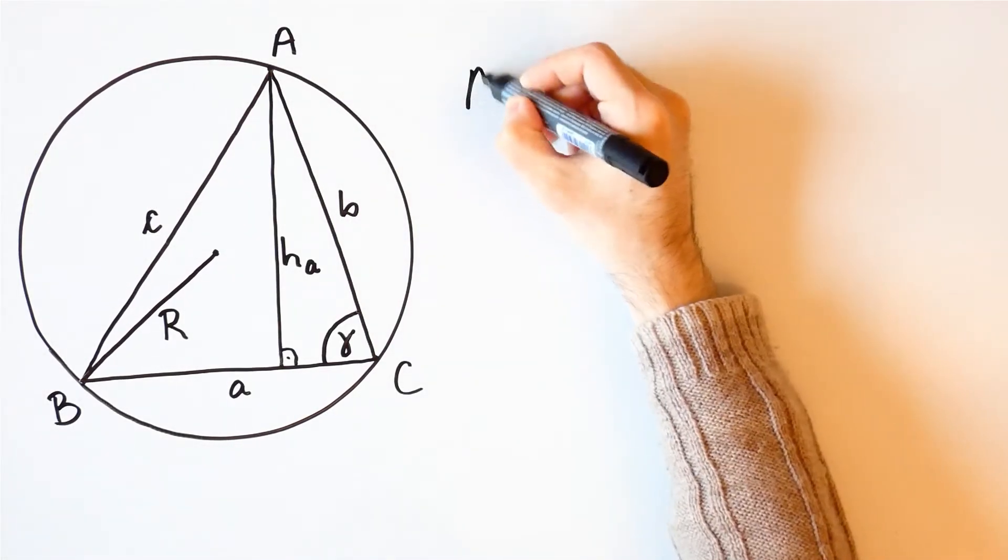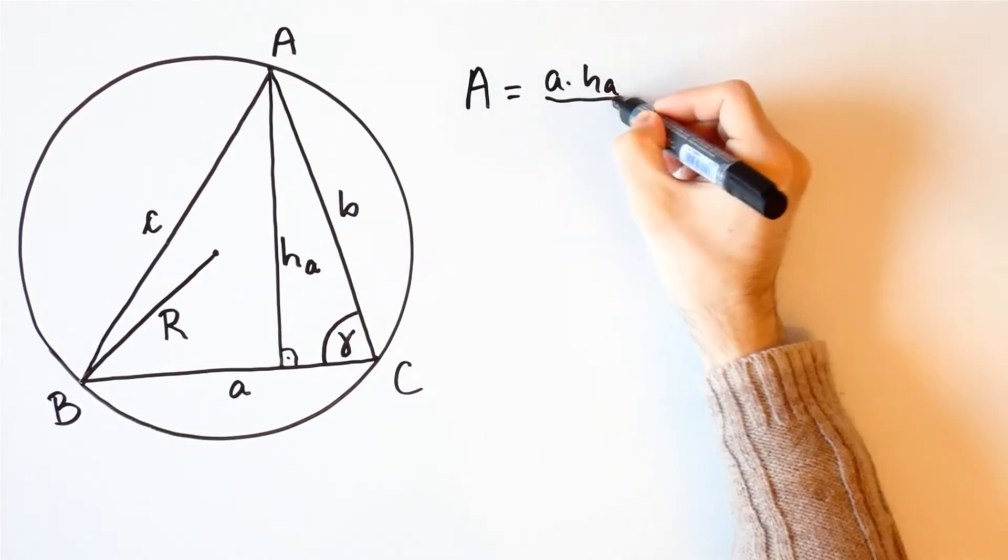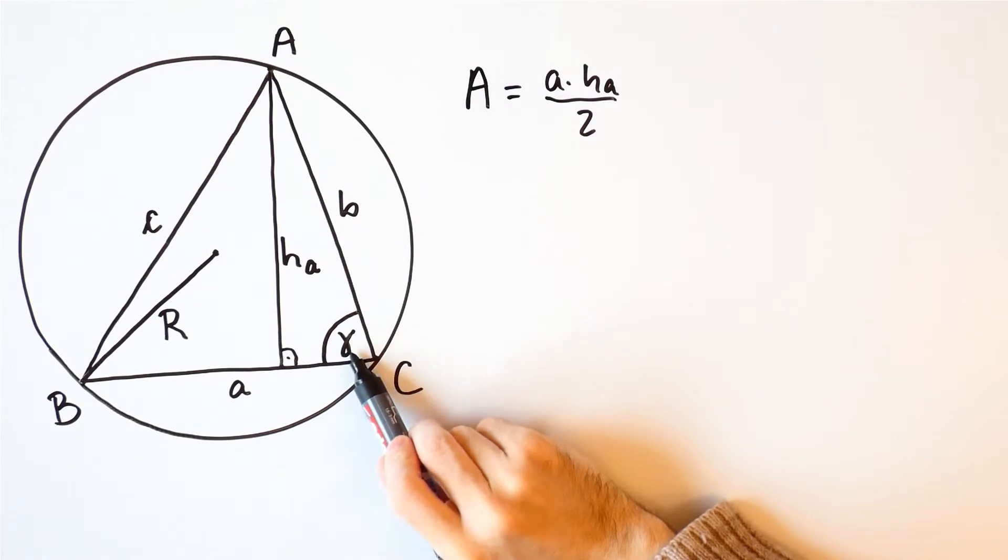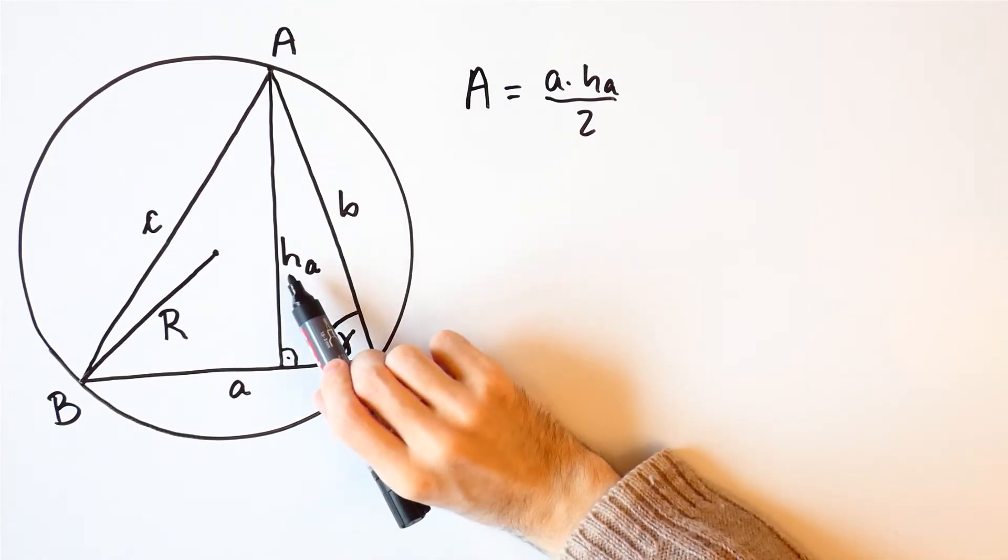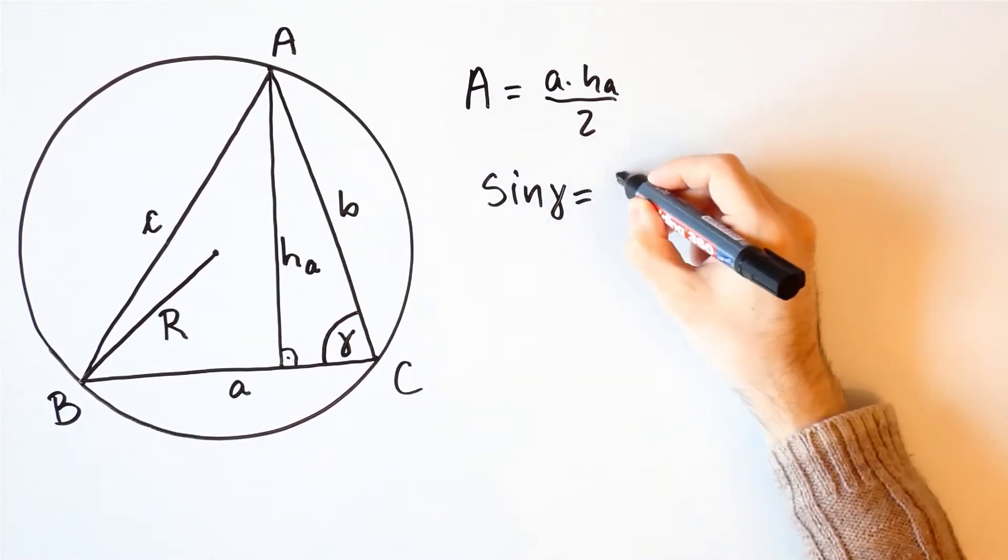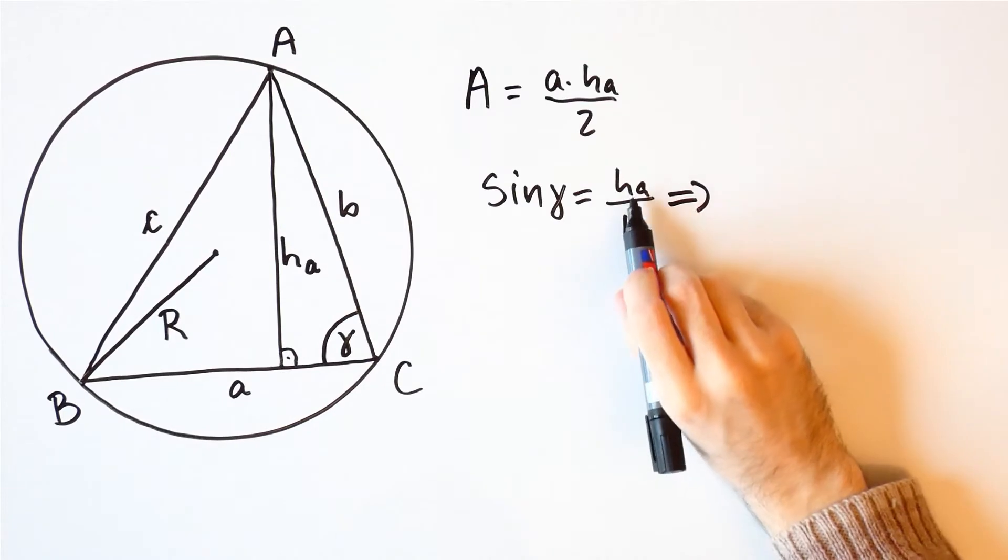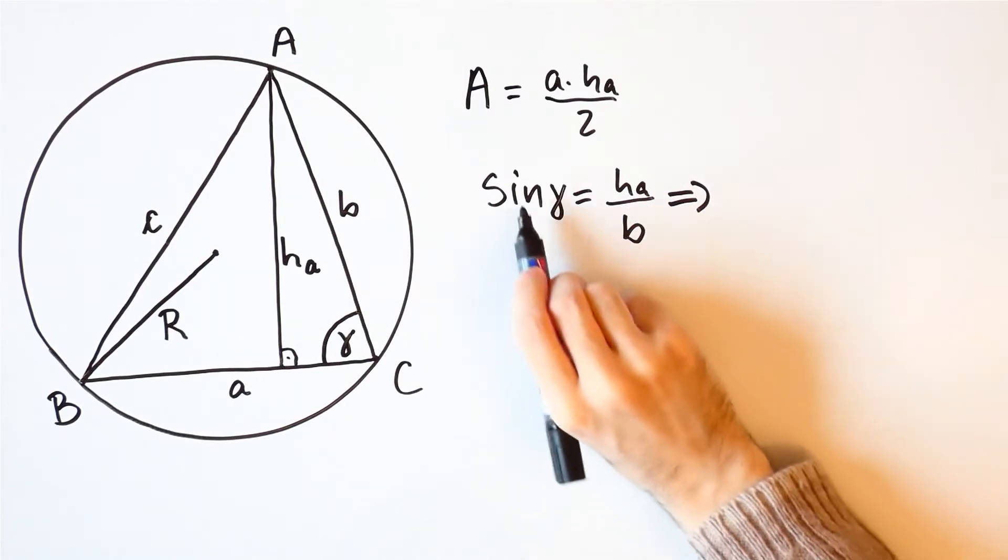The area of a triangle is equal to A times HA over 2, but this angle is gamma, so the sine of gamma is equal to HA over B, which means that HA is equal to B times the sine of gamma.